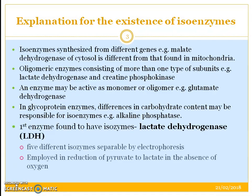Creatine phosphokinase has three. Thirdly, an enzyme may be active as a monomer or oligomer, as for example glutamate dehydrogenase. Fourthly, in glycoprotein enzymes, differences in carbohydrate content may be responsible for their isoenzyme-like property, for example alkaline phosphatase.